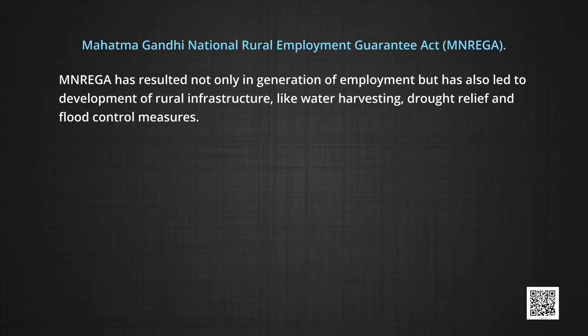MGNREGA is the first scheme of its kind to provide wage employment on demand, ensuring a safety net for rural people. It has resulted not only in generation of employment but also in development of rural infrastructure like water harvesting, drought relief, and flood control measures. Implemented mainly by Gram Panchayats, it has improved living standards, protected the environment, empowered rural people particularly women, reduced rural-urban migration, and fostered social equity — apart from its core objective of generating employment.